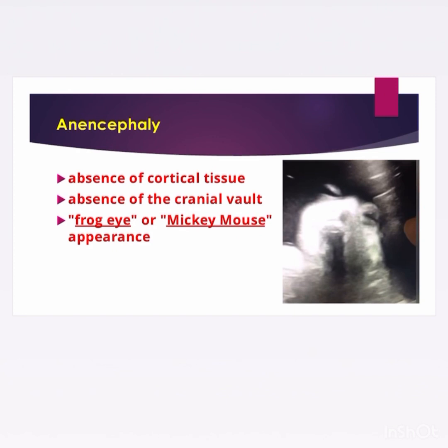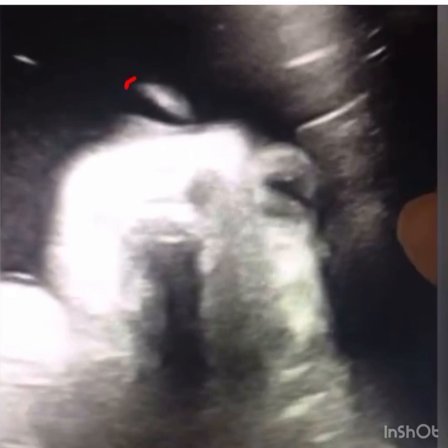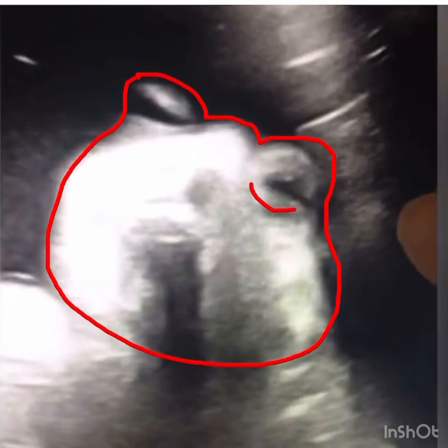In anencephaly, we do not see cortical tissue of the brain and the calvarium is also not seen, making an appearance of frog eye or Mickey Mouse. In this picture of a 33-week fetus, we can see the face of the fetus and outline its borders. We can also see the eyes, with the appearance of frog eye.